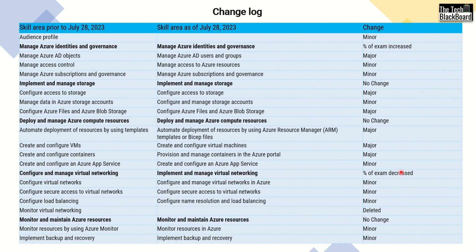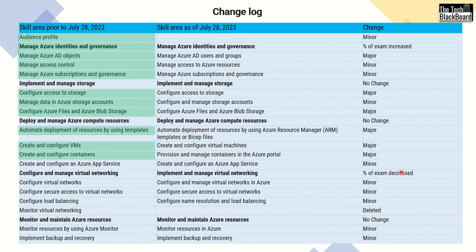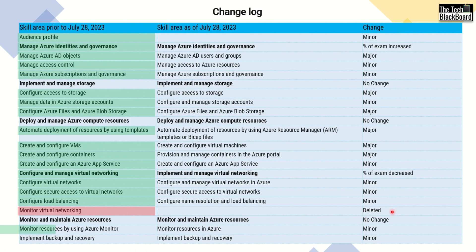I will quickly highlight the sections where we have changes: starting with Audience Profile, then Manage Azure Identities and Governance, Manage Azure AD Objects, Manage Access Control, Manage Azure Subscription and Governance, Configure Access to Storage, Manage Data in Azure Storage Account, Configure Azure Files and Azure Blob Storage, Automate Deployments of Resources by using Templates, Create and Configure Virtual Machines, Create and Configure Containers, Create and Configure Azure App Services, Configure and Manage Virtual Networking with a decrease in percentage, Configure Virtual Networks, Configure Secure Access to Virtual Networks, Configure Load Balancing. Monitor Virtual Networking is actually deleted — please note that. And then Monitor Resource by using Azure Monitor, and finally Implement Backup and Recovery.